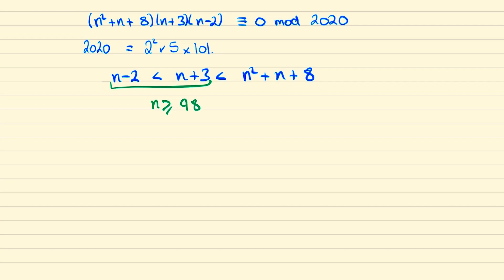So if we are to find the smallest solution then we better look when n squared plus n plus 8 is 0 mod 101. And then it would follow that the other two expressions would either be 0 mod 5 or 0 mod 2. So that we can write the following.